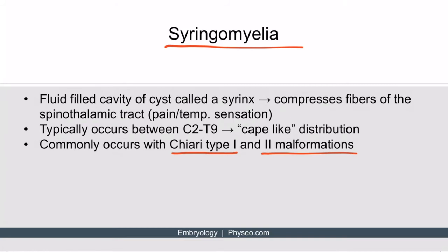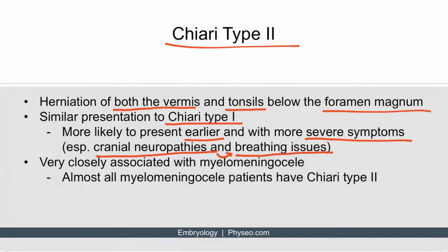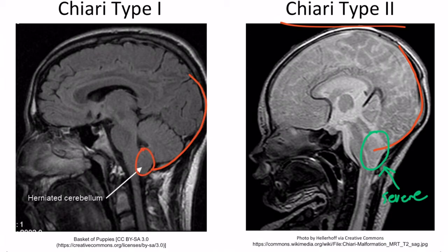Chiari type two malformations are defined as the herniation of both the vermis and the tonsils below the foramen magnum, so it has a very similar presentation to Chiari type one. However, it is more likely to present earlier and with more severe symptoms — you should be thinking specifically of cranial neuropathies, more precisely the breathing issues that can result. On the right image you can see a considerable downward displacement compared to Chiari type one, where only the tonsil herniates down.